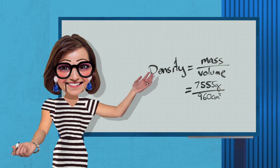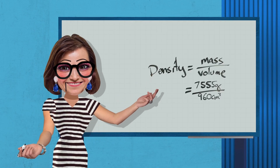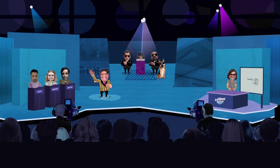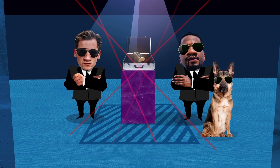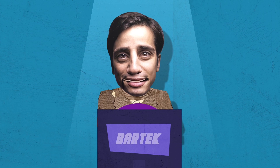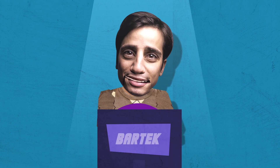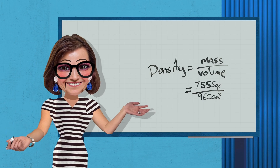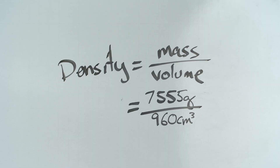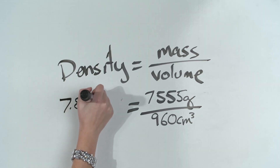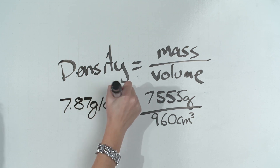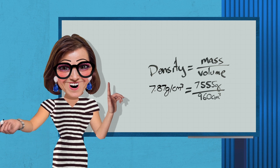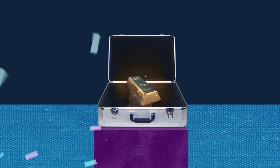Well, we know that density equals mass divided by volume. So if the answer isn't 19.3 grams per cubic centimeter, it can't be gold. 3, 2, 1, go! Bartek from Ballymoney, gold or not? Its density is 7.87 grams per cubic centimeter, so no. Rula, is he right? If we divide 7,555 grams by 960 cubic centimeters, we get 7.87 grams per cubic centimeter, which, as you know Isaac, is the density of iron. He is correct — it's not gold. So Bartek, the iron's all yours.